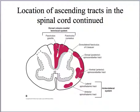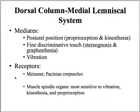These are going to synapse respectively on the nucleus gracilis and nucleus cuneatus. The dorsal column medial lemniscal system mediates postural positions — that's proprioception, kinesthesia, as well as some fine discriminative touch and vibration. The mechanical sensory receptors conveying this information are the Meissner corpuscle and Pacinian corpuscle. In addition, you're getting information from muscle spindle organs, which are sensitive to vibration, kinesthesia, and proprioception.